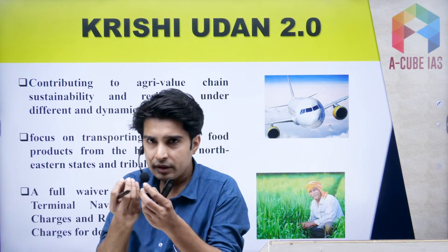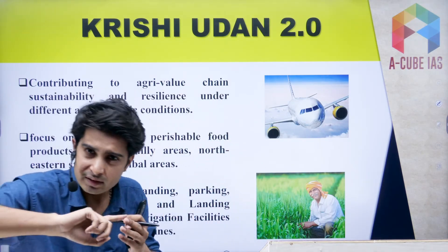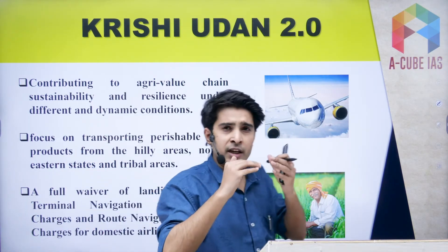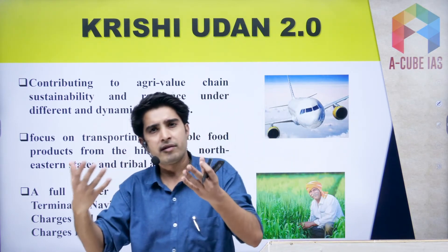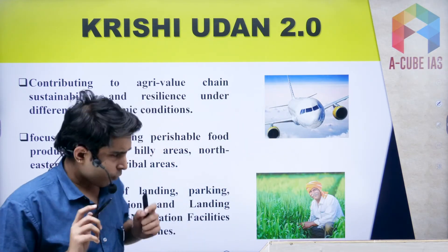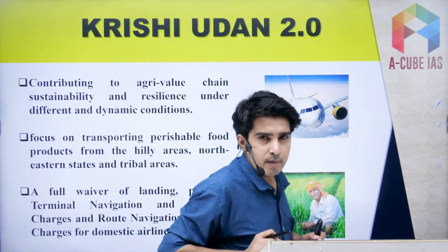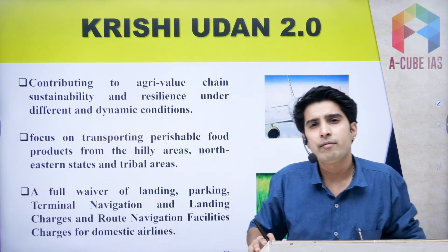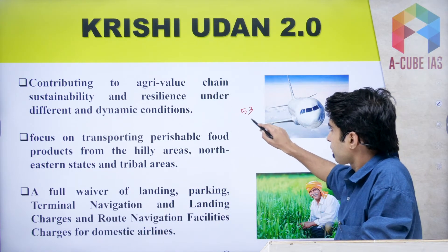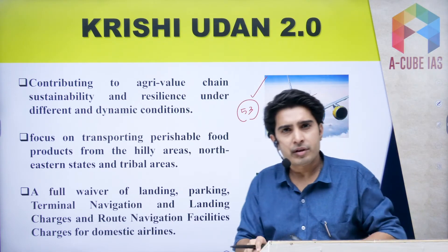From that central location, agri produce will be transported to different parts of the country. One more important point: this scheme will cover 53 airports, which is a very important detail to remember.